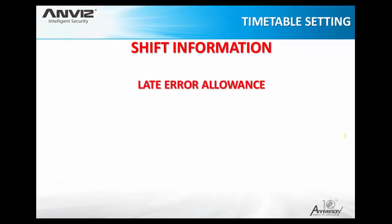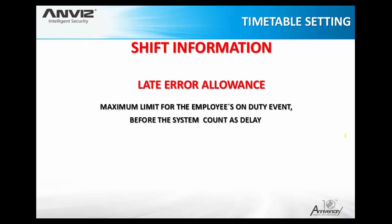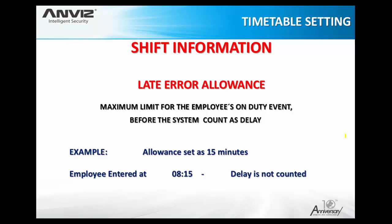The Late Error Allowance sets the maximum grace period before the system counts an arrival as a delay. For example, if we set fifteen minutes, an employee who enters by eight-fifteen will not be counted as late because it's within the allowance. However, if he clocks in sixty minutes after the on-duty time, it will be counted as sixteen minutes of delay because he exceeded the allowance limit.